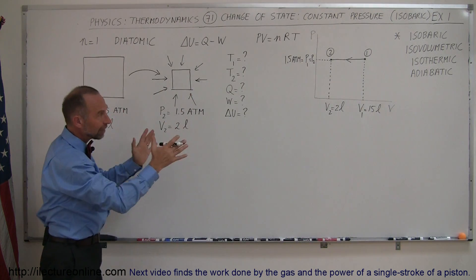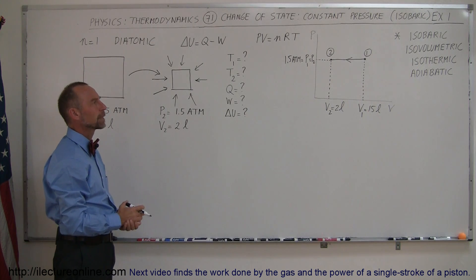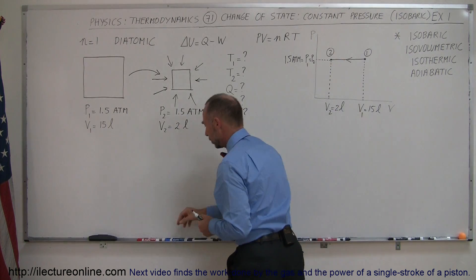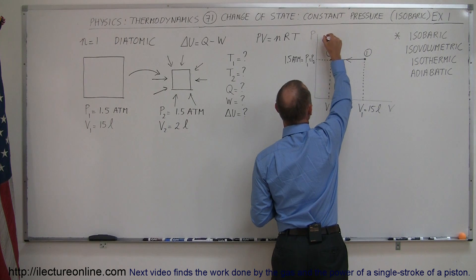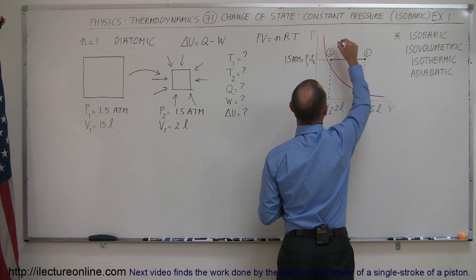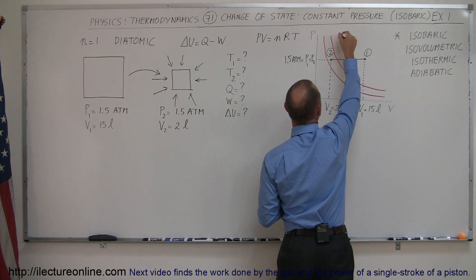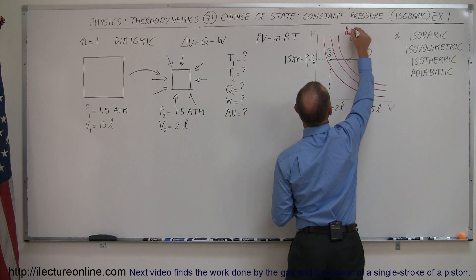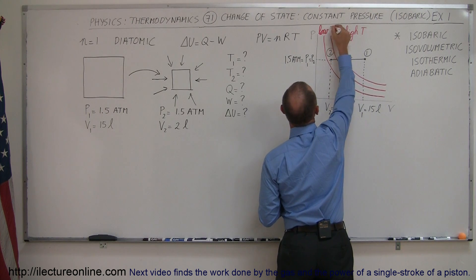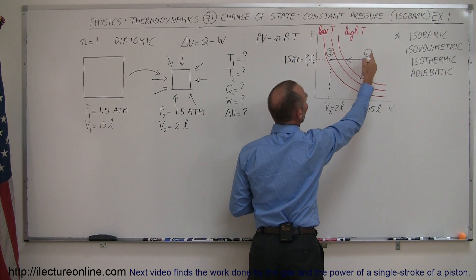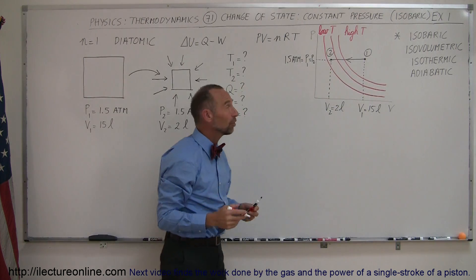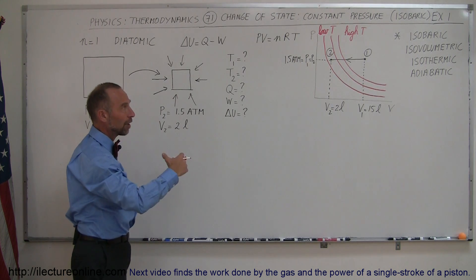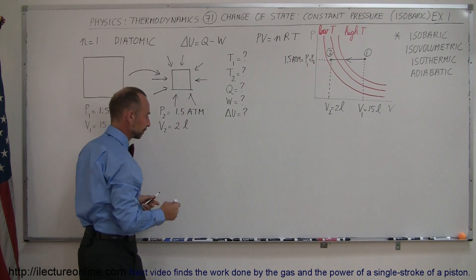Graphically, we now have a good feel for what's going on. The isotherms — shown in red — run diagonally across the PV diagram. Higher temperature isotherms are to the right, and lower temperature isotherms are to the left. So when we go from state 1 to state 2, moving left, we go from a higher temperature to a lower temperature. In an isobaric process with decreasing volume, temperature also decreases.